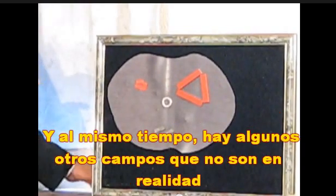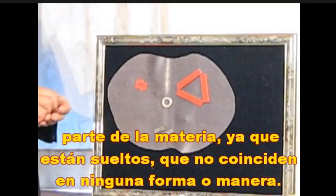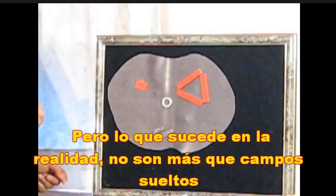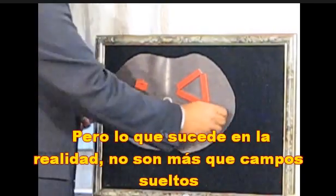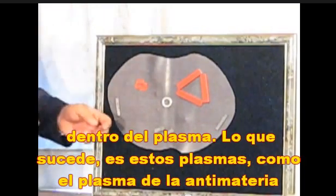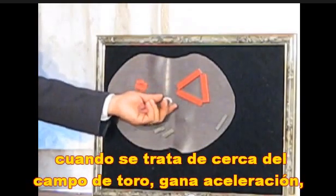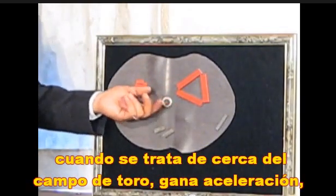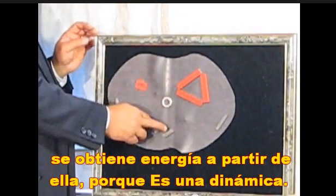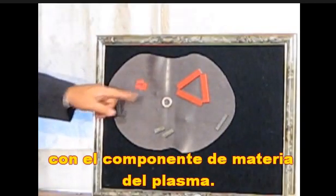At the same time, there are some other fields which are not actually part of the matter — because they are loose, they don't match in any shape or form. They are just loose fields within the plasma. What happens is that these plasmas, like the plasma of anti-matter, when they come close to the torus field, gain acceleration and gain energy from it because it is dynamic. The same happens with the anti-matter and with the matter-component plasma.